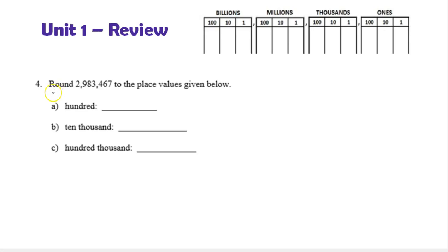Question 4: round two million nine hundred eighty-three thousand four hundred sixty-seven to the place values given. Let's start by putting this in the chart. I notice there's three grouping values, so this will be in the third from the right, which is millions, and we just have the number two. And now I'm going to fill them in going to the right: 9, 8, 3, 4, 6, 7.